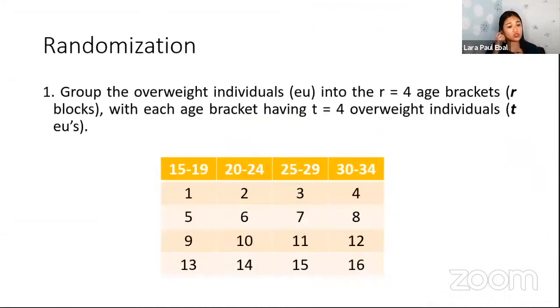Now determine whether at least one weight reducing program resulted to a different weight loss mean. Also determine if the blocking is effective. So you have to test for the treatment, for the program, and for the age bracket or age group. Conduct at 5% level of significance.